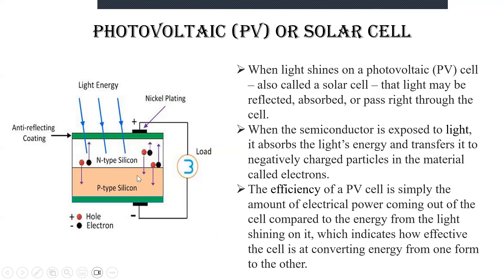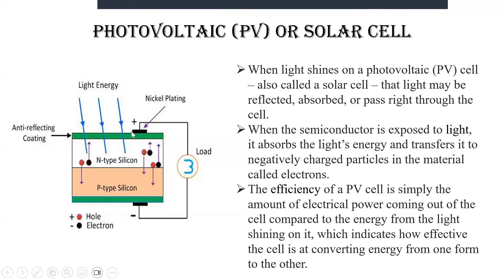When electrons and holes fuse together, a band gap is produced, which indicates what wavelength of light the material can absorb or convert into electrical energy. If the semiconductor's band gap matches the wavelength of the light falling on the coating, then the cell can efficiently make use of more energy. This is how it works.